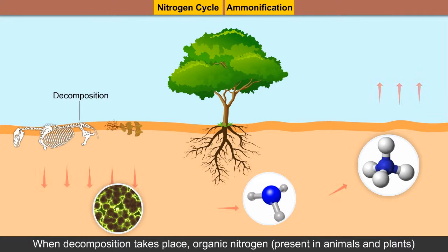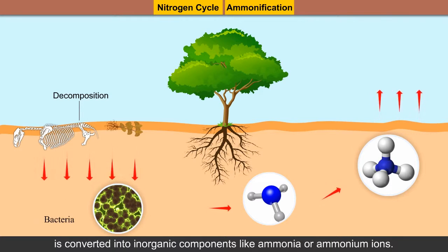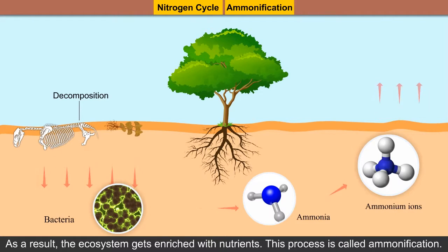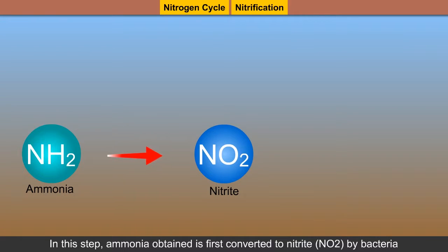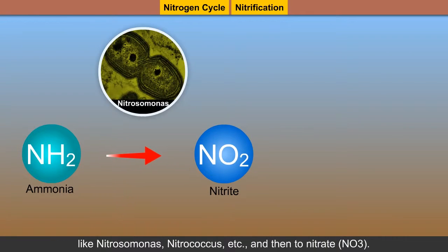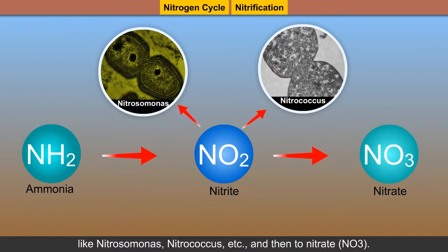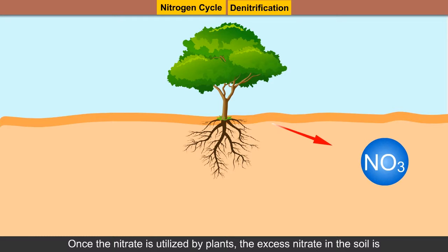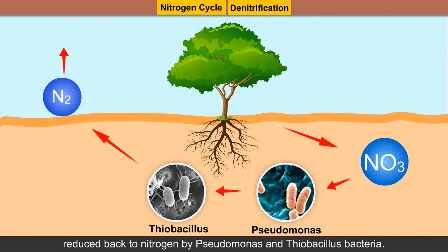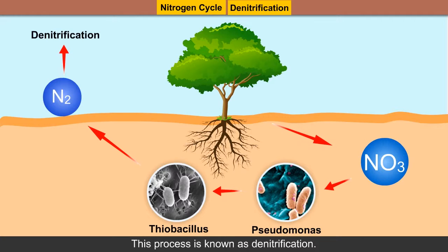The nitrogen is fixed in soil in the following steps. Ammonification: When decomposition takes place, organic nitrogen present in animals and plants is converted into inorganic components like ammonia or ammonium ions. As a result, the ecosystem gets enriched with nutrients. This process is called ammonification. Nitrification: Ammonia obtained is first converted to nitrite (NO2) by bacteria like Nitrosomonas, Nitrococcus, etc., and then to nitrate (NO3). Bacteria involved in nitrification are called chemoautotrophs. Denitrification: Once the nitrate is utilized by plants, the excess nitrate in the soil is reduced back to nitrogen by Pseudomonas and Thiobacillus bacteria. This process is known as denitrification.